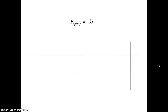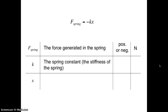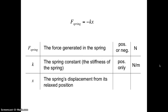Here's Hooke's Law again. There are three variables in this equation: F spring, K, and X. F spring is the force generated in the spring — it can be positive or negative based on direction, and force is measured in newtons. K is the spring constant, which we can think of as the stiffness of the spring. It can only be positive; we can't have negative stiffness. K is measured in newtons per meter. X is the spring's displacement from its relaxed position — how far it has been stretched or compressed — and it can be positive or negative. X is a distance, measured in meters.